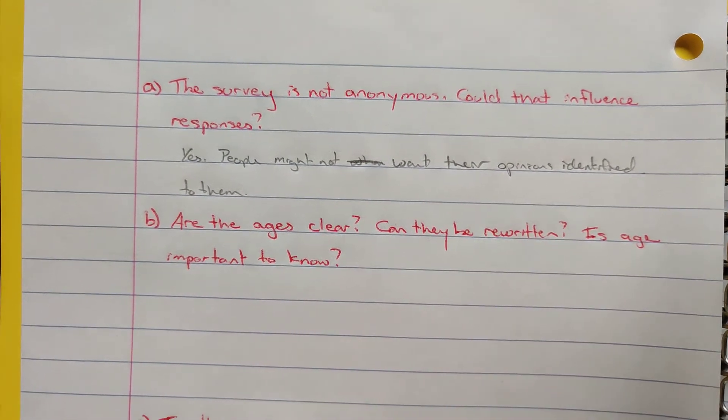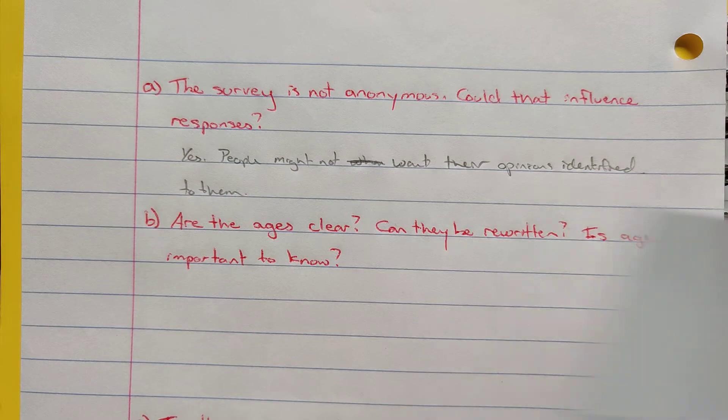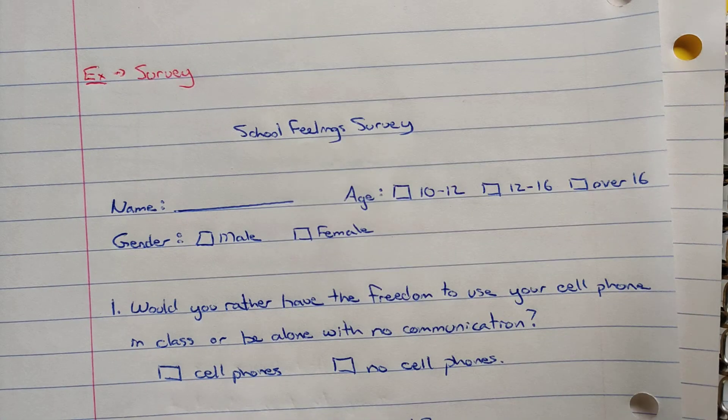Are the ages clear? Can they be rewritten? Is age important to know? So if we look here, the ages are 10 to 12, 12 to 16 and over 16. They're not really that clear. 10 to 12 is fine, but then we have 12 to 16. So if I'm 12 years old, which box do I choose?